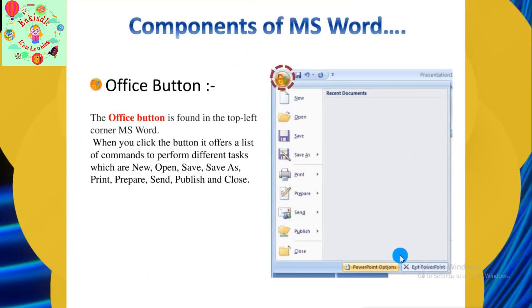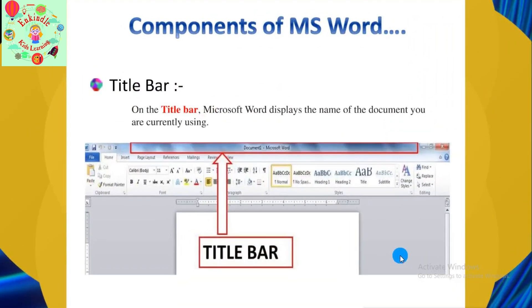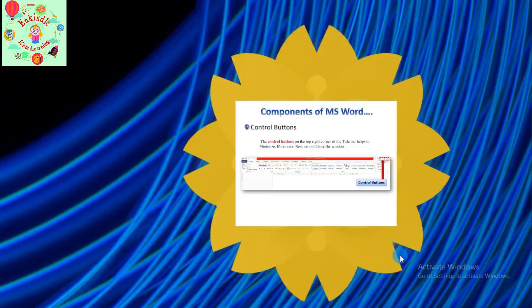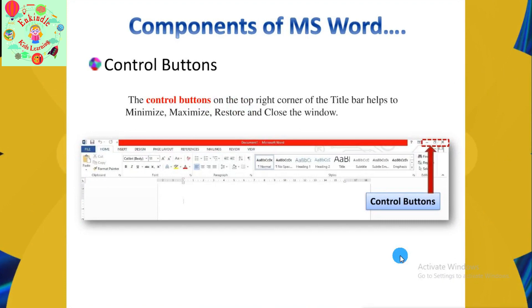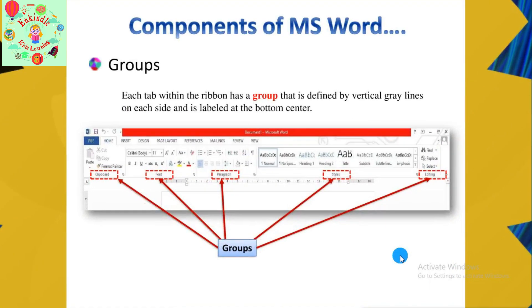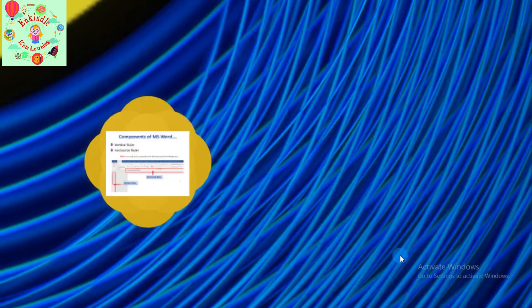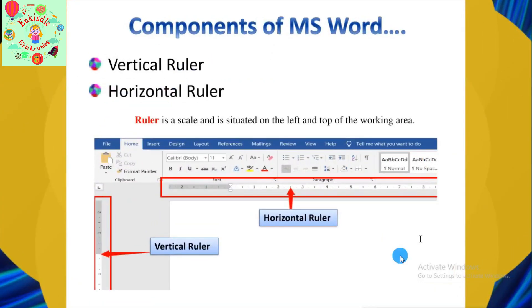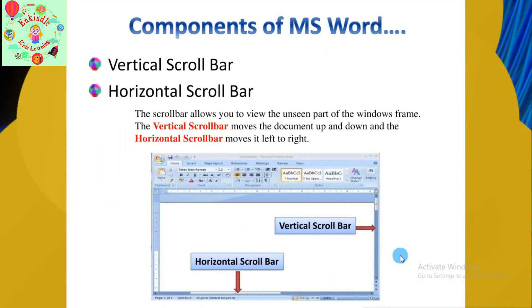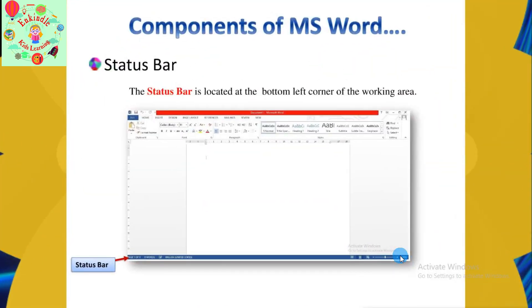Then we saw all the components of MS Word: Office Button, Title Bar, Quick Access Toolbar, Control Buttons, Ribbon, Groups, Working Area, Vertical Ruler and Horizontal Ruler, Vertical Scroll Bar and Horizontal Scroll Bar, and Status Bar.